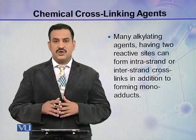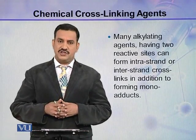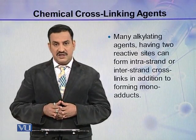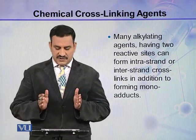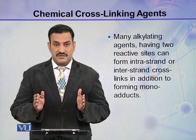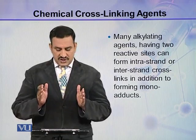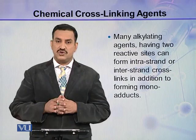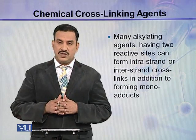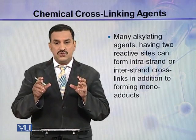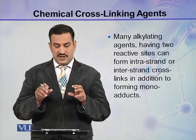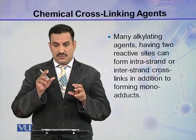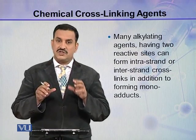Let us come to the chemical crosslinking agents which damage DNA. There are many alkylating agents which have two reactive sites, and these two reactive sites can form intrastrand or interstrand crosslinks. In addition to the formation of monoadducts, because there are two sites present in these agents, they can make monoadducts as well as crosslinks.